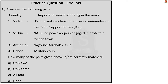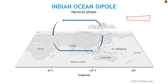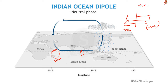The next question gives three statements about the Indian Ocean Dipole (IOD) and asks how many are correct. First, what is an IOD? In physics, a dipole is a pair of oppositely charged poles separated by a distance. Similarly, the IOD is defined by the difference in sea surface temperature between two areas — the Arabian Sea on the western coast of India and the Bay of Bengal on the eastern side. When the Arabian Sea has a warmer sea surface temperature compared to the Bay of Bengal, it is called a positive IOD, and vice versa.